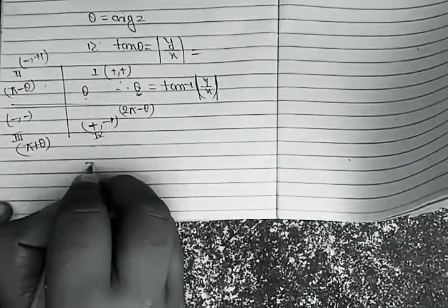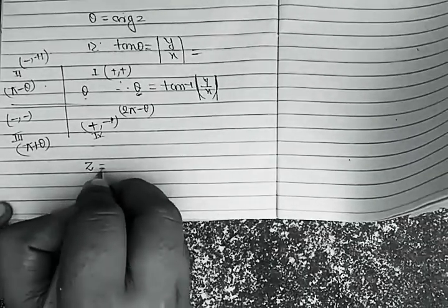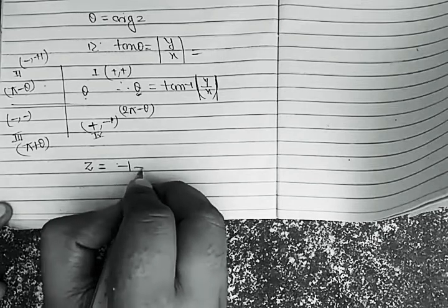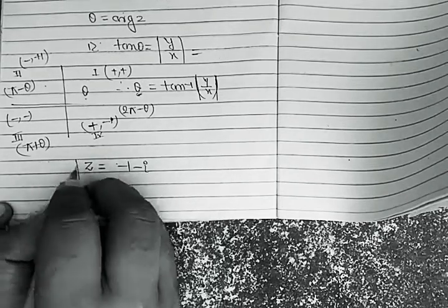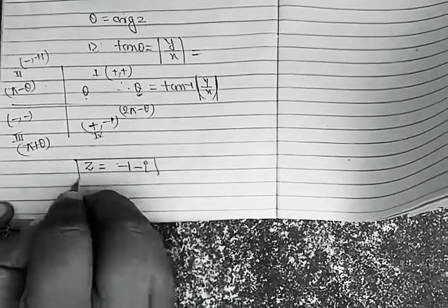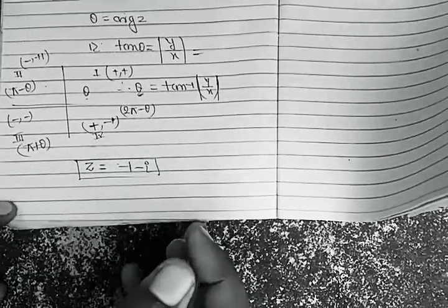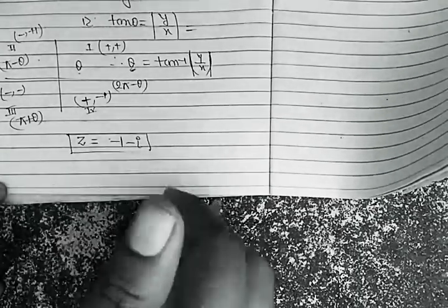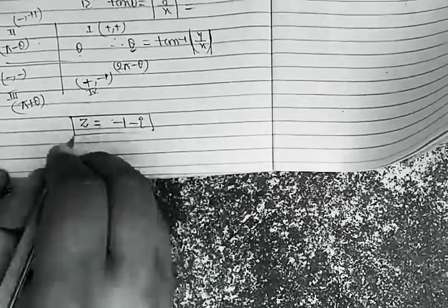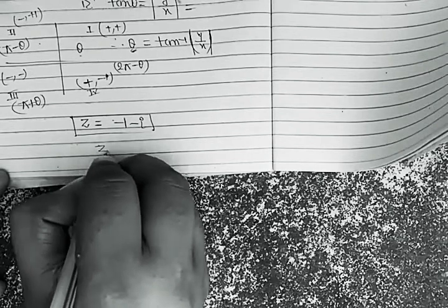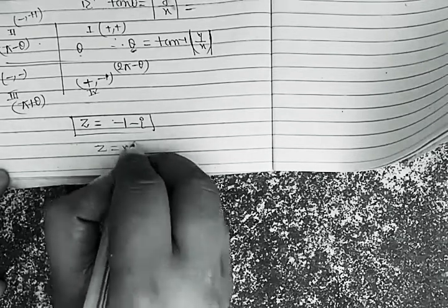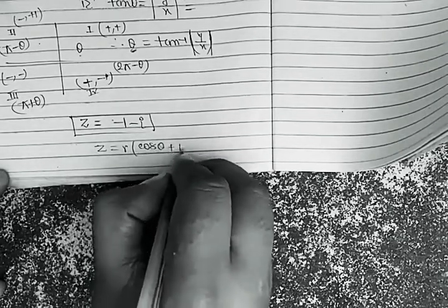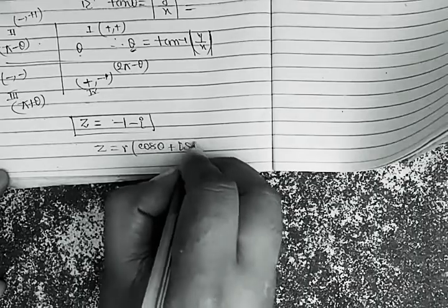So let's work through an example. z equals −1 − i. This is a complex number and we need to calculate its polar form — we need to convert it to the form r(cos θ + i sin θ).